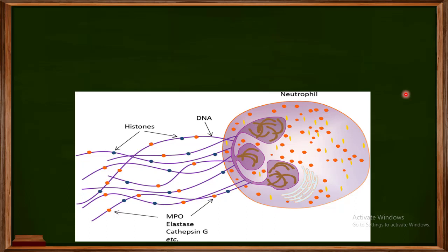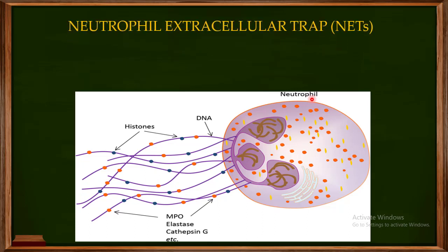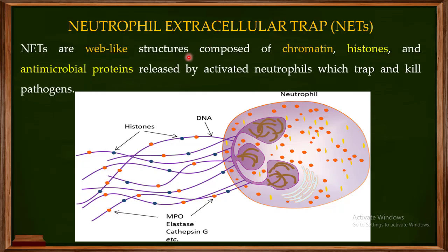Welcome back to this next video, the 14th video of Chapter 2 of immunology. In this video, I'm going to focus on one of the important defense mechanisms displayed by neutrophils, known as the neutrophil extracellular traps — NETs for short. These NETs are a web-like structure composed of chromatin, histones, and antimicrobial proteins, and they are released by activated neutrophils.